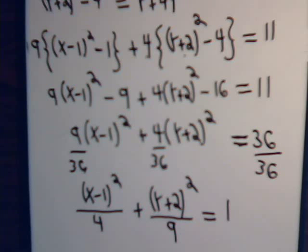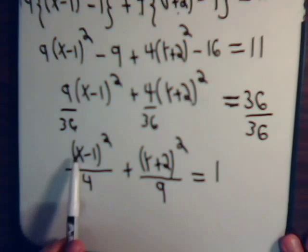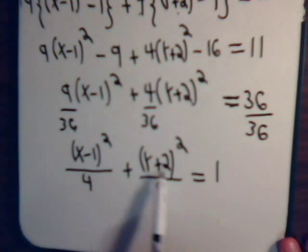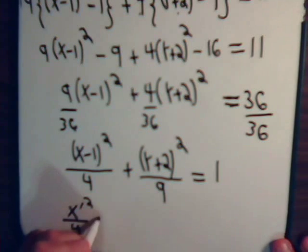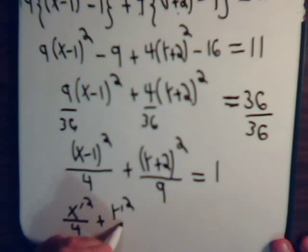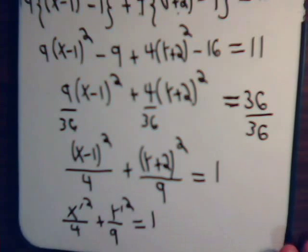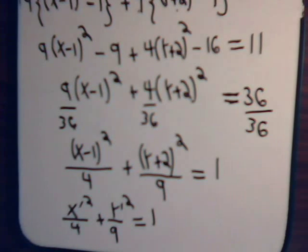And of course what we have here then is the equation of an ellipse in standard form. We could say, well, we'll let x prime be this, let y prime be this, and then we would have x prime squared over 4 plus y prime squared over 9 equals 1.